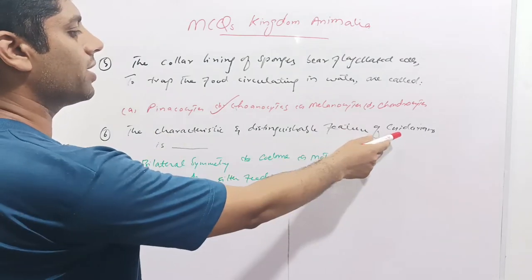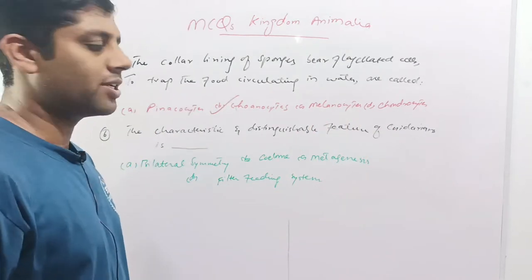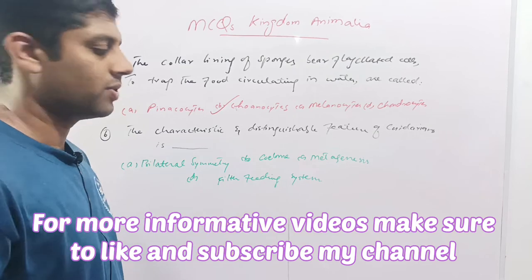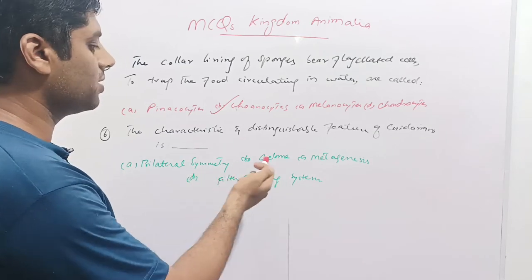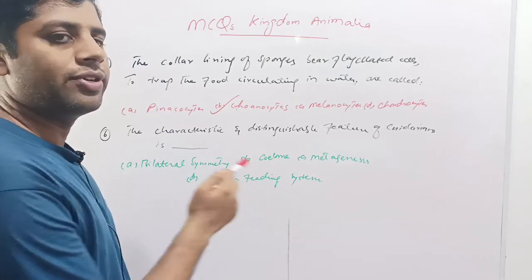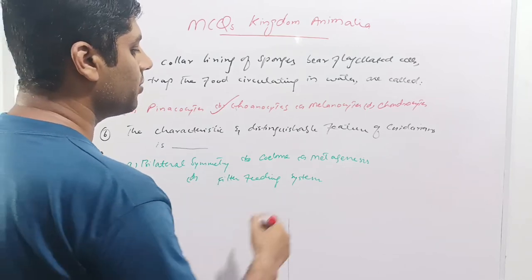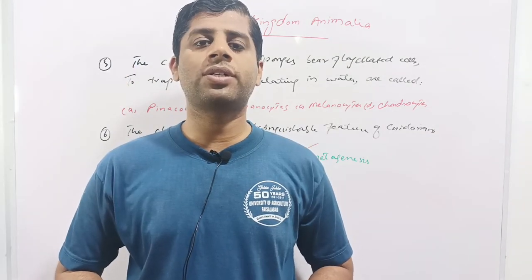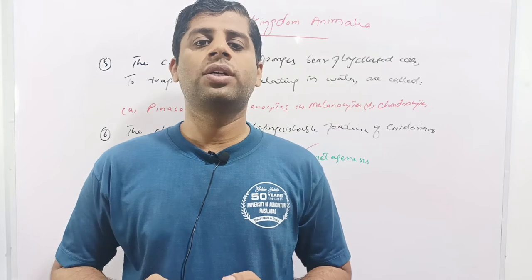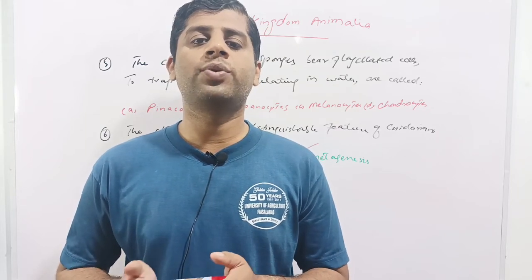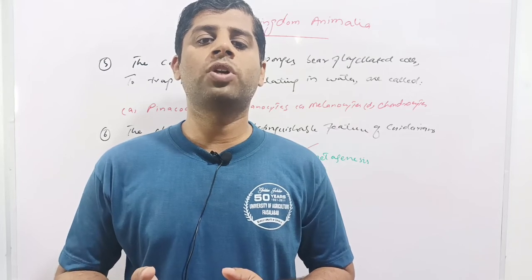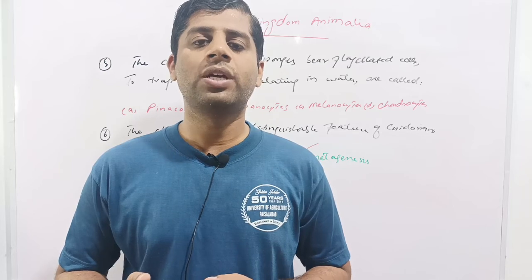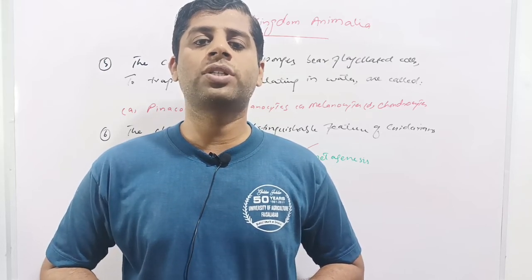The characteristic and distinguishable feature of cnidarians is: given options are bilateral symmetry, coelom, metagenesis, or filter feeding system. Other phyla are also bilaterally symmetrical, coelomate, and have filter feeding systems. The distinguishable feature of cnidarians is metagenesis — the alternation of generation between reproductive and nutritive modes of life. Medusa is the reproductive mode and polyp is the nutritive mode, and they undergo alternation of generation.